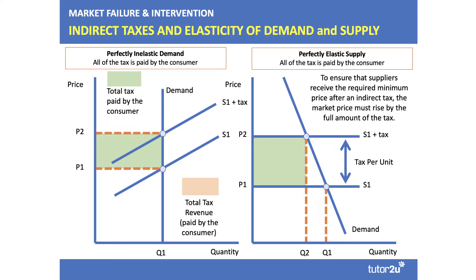The producer will pass on the whole tax when demand is perfectly inelastic, as in the left-hand diagram here. Consumers are totally insensitive to the price, so the producer can pass on the whole of the tax straight away. All of that green area goes to the government in tax. It's also the case when supply is perfectly elastic on the right-hand side — if there is a tax on the product, the supplier can pass on the tax to the consumer because the supplier is perfectly elastic; they just raise their price plus the tax.